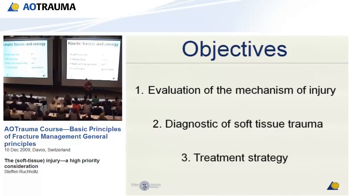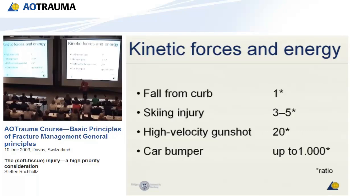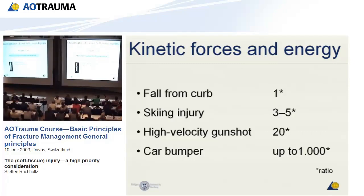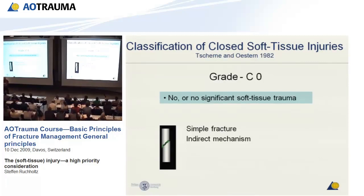Fractures are not all the same. The energy and force that caused the fracture differs. Therefore, you find different types of fractures and soft tissue trauma according to the power and energy that went into the extremity. A simple fall from a curb is one point. Skiing injuries are about five times higher in energy. This goes up to 1,000 times higher in a severe car crash. This helps you imagine what is going on below the skin.